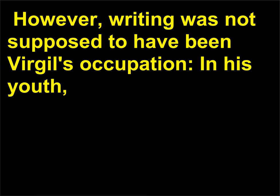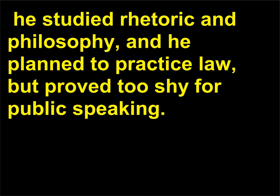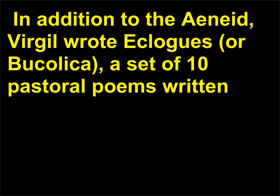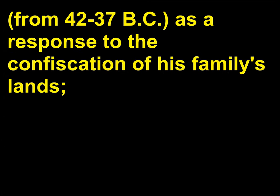However, writing was not supposed to have been Virgil's occupation in his youth. He studied rhetoric and philosophy, and he planned to practice law, but proved too shy for public speaking. So he returned to the small family farm his mother and father operated, where he studied and wrote poetry. In addition to the Aeneid, Virgil wrote Eclogues, or Bucolica, a set of ten pastoral poems written from 42 to 37 BC, as a response to the confiscation of his family's lands.